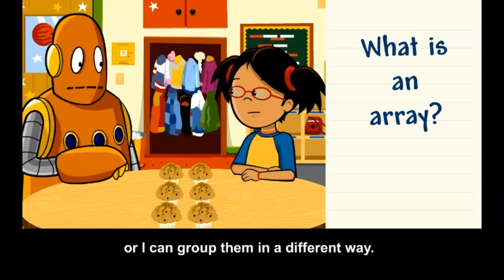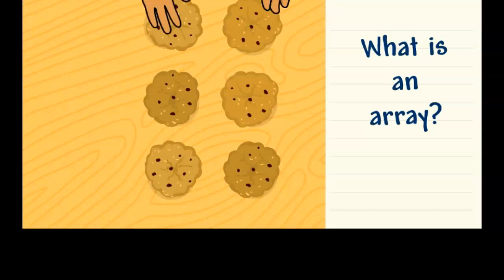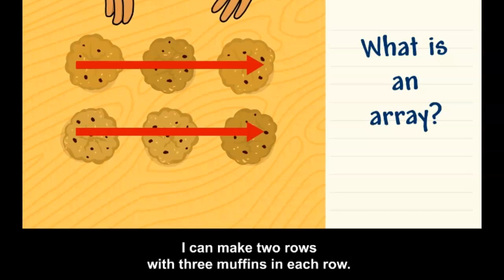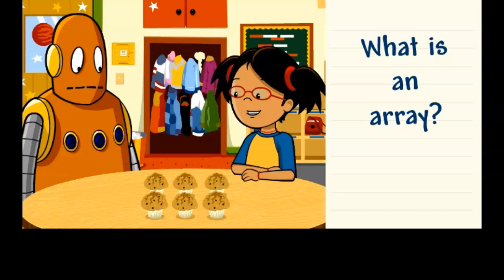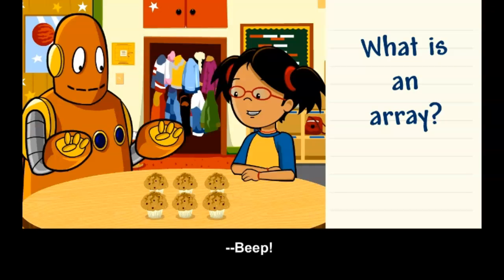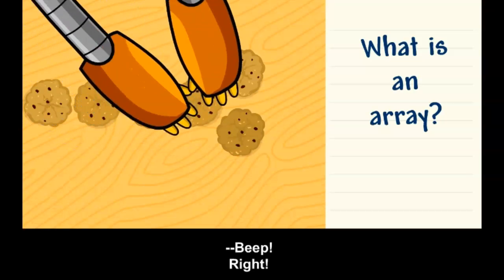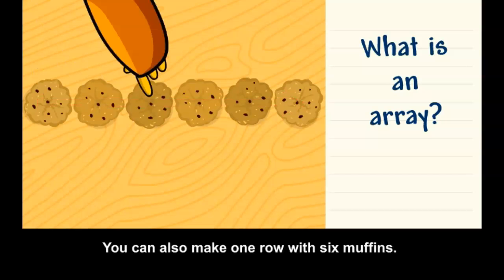Or I can group them in a different way. I can make two rows with three muffins in each row. You can also make one row with six muffins.